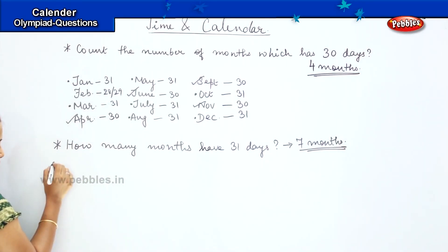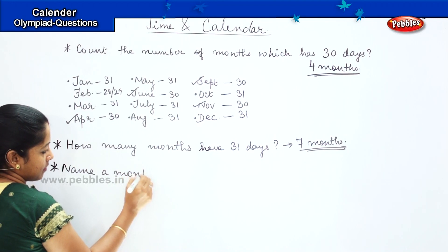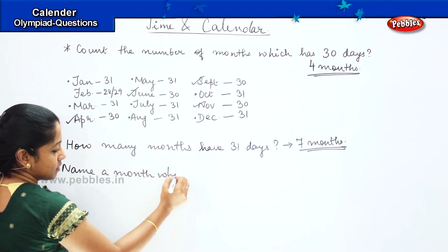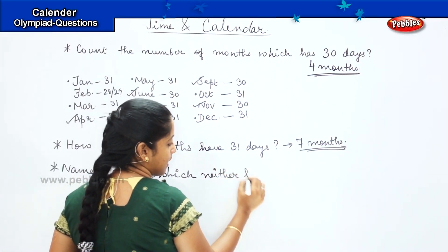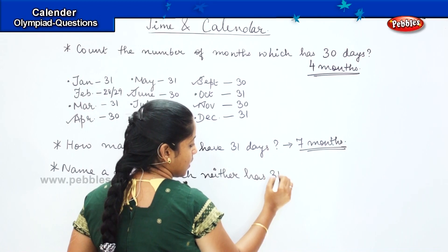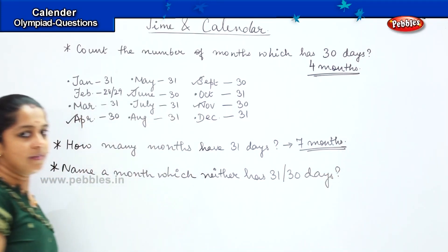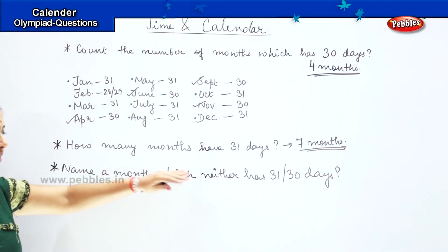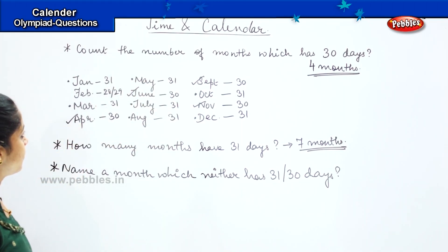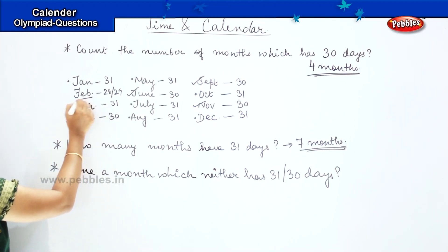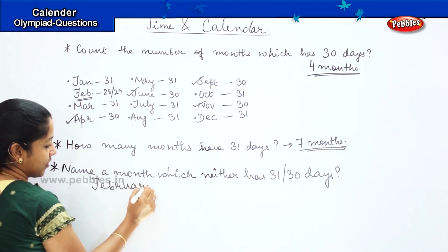Here is your tricky question: name a month which neither has 31 nor 30 days. You have to name a month which has neither 31 days nor 30 days. Which month is it? Yes, it is the month of February. So your answer is February.